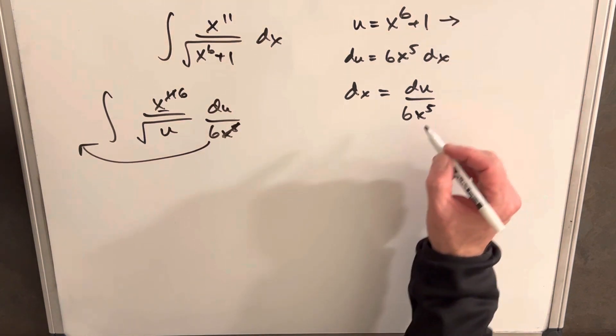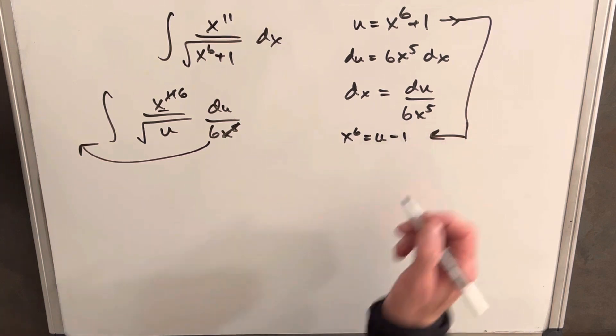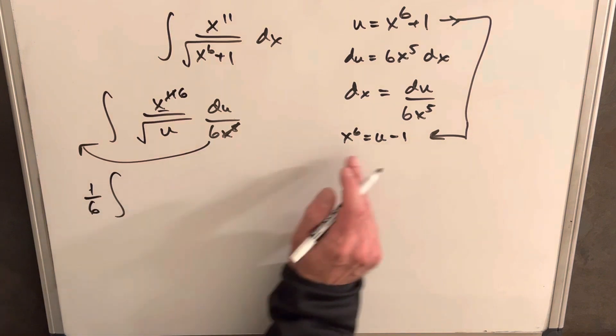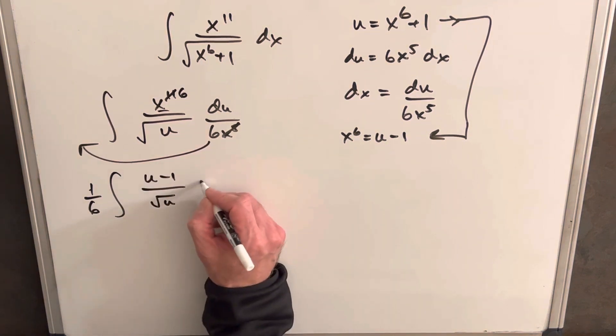So let's just use this formula. We can write x to the 6th as u minus 1, and then now we can substitute. We'll have 1 6th up front. Our x to the 6th is u minus 1. We'll keep our square root of u in the denominator du.